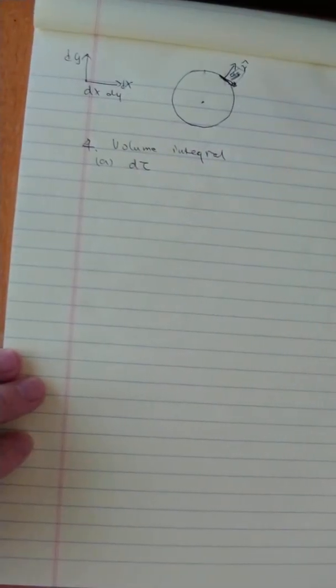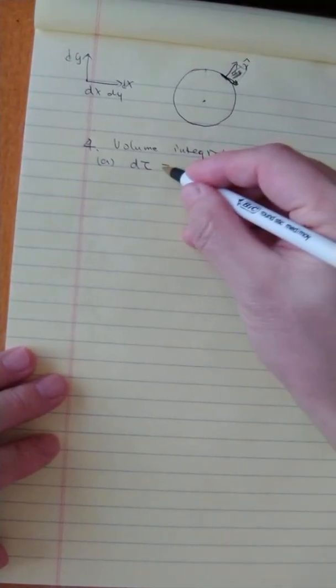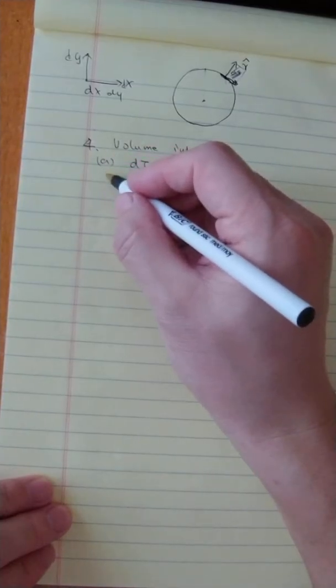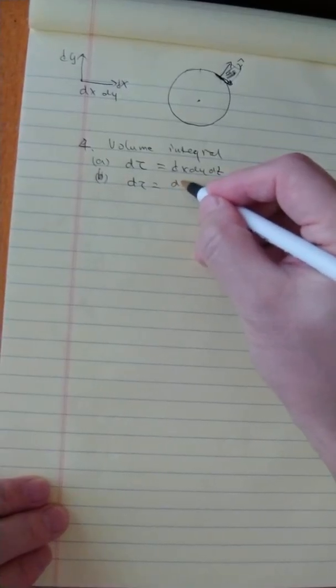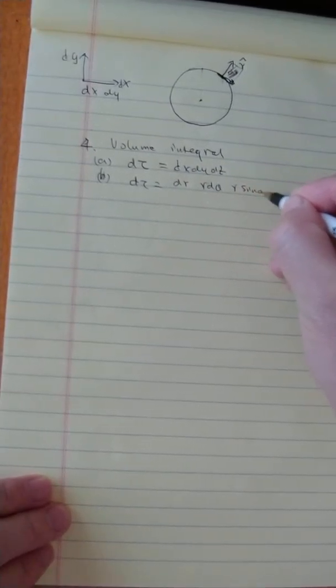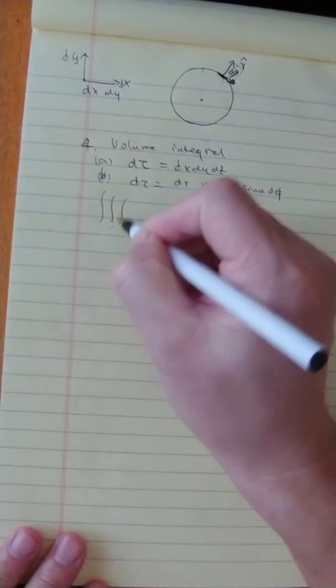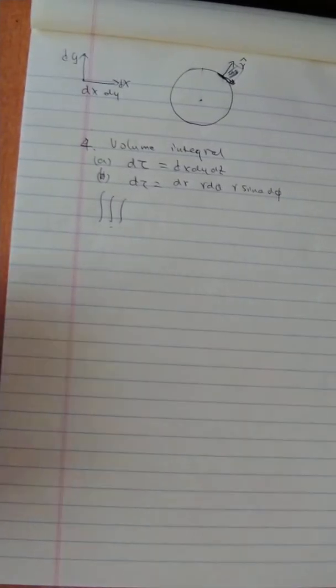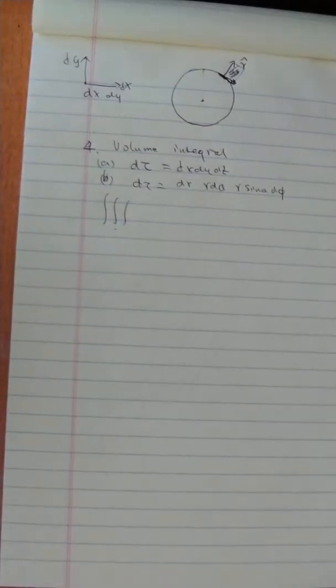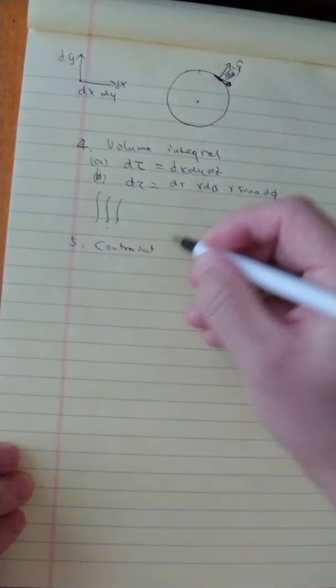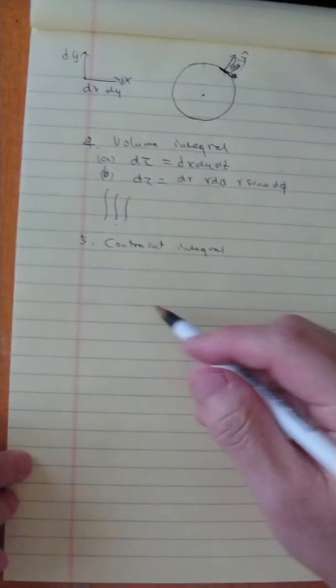Let's do the last one — the volume integral. The volume integral is simpler in many ways because it only has one element. For Cartesian coordinates, d τ = dx·dy·dz — that's it. There's no other complication or variation, since it's just all three variables multiplied together. For spherical coordinates, d τ = dr·r·dθ·r·sin θ·dφ. When you do the volume integral, you have three sets of limits. Those are the generic volume elements.